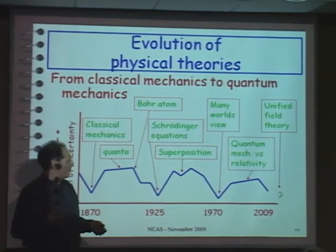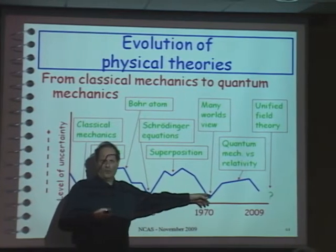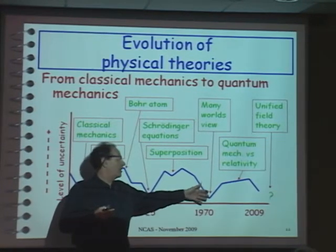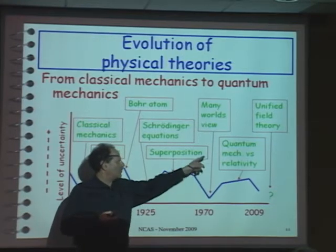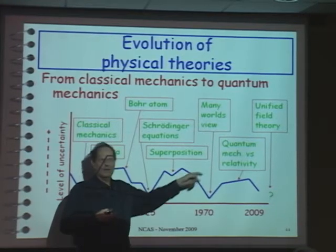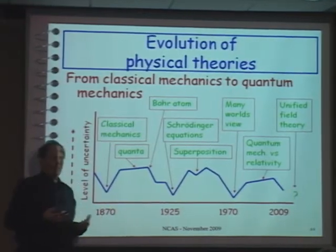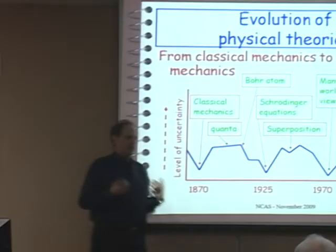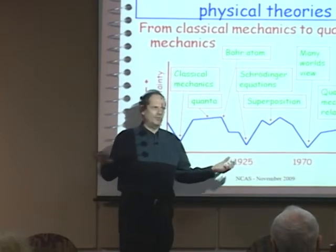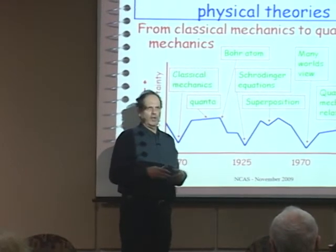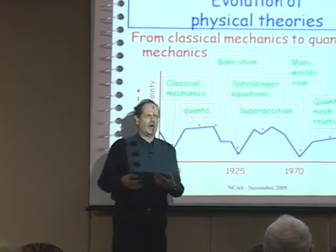Now we're getting past what I know about physics, but in 1970 we had the many-worlds view, which said we sort of know what's going on. But then we have the problem today that quantum theory really explains what's going on at the subatomic level, while relativity really explains how galaxies seem to be moving around one another and how light seems to work. The problem is those two theories are incompatible.